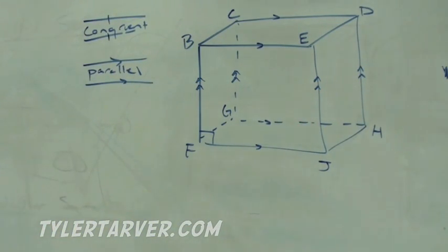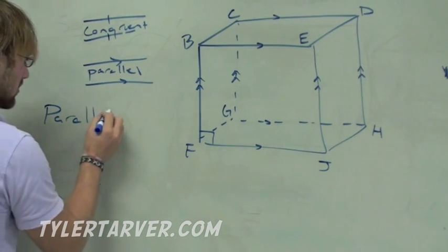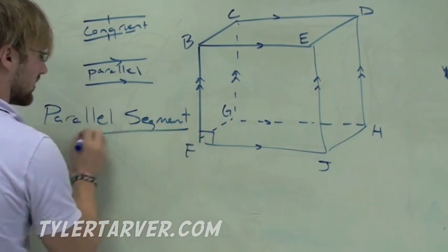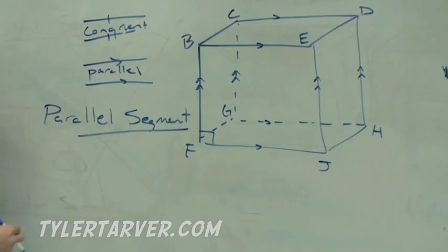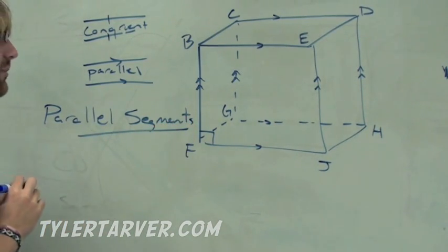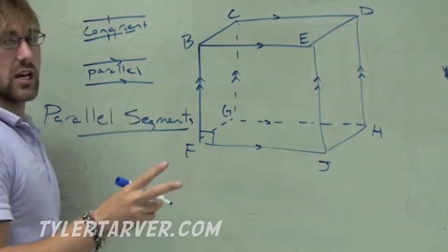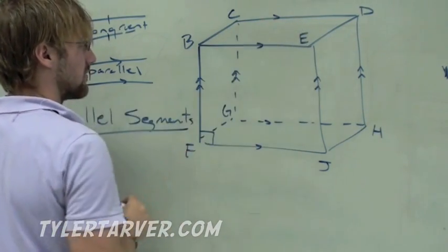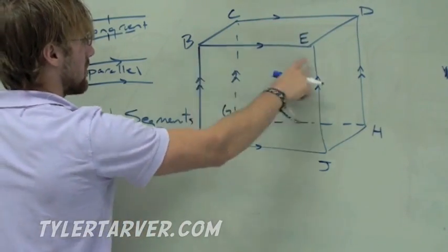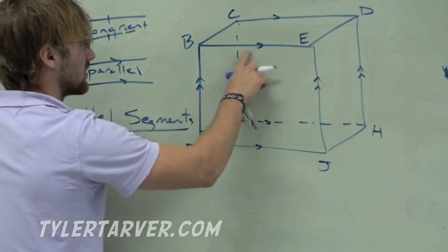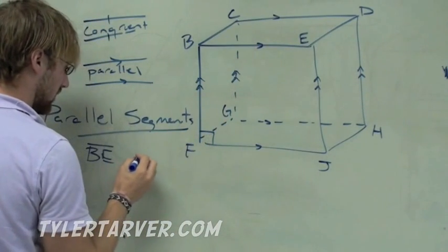Now, the first thing we're going to look at is parallel segments. Actually, since these have endpoints and they stop, they're going to be called segments. We want to name a pair of parallel segments. All we do is find two segments that have the exact same slope, which are indicated by those little V marks. BE is the segment, and it's parallel to CD. Good deal.